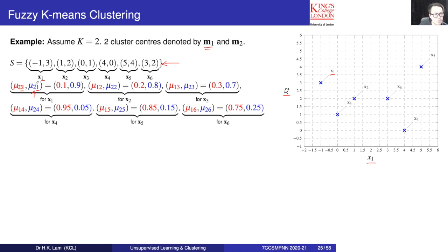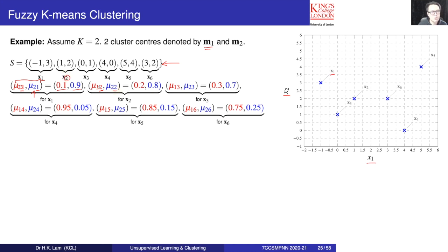The actual values are, for example, 0.1 and 0.9, and their sum is 1 because normalization has already been performed. The sum of these two membership grades is 1. The same idea applies to the next samples, where the second subscript refers to the sample number and the first subscript refers to the cluster center association, and so on.